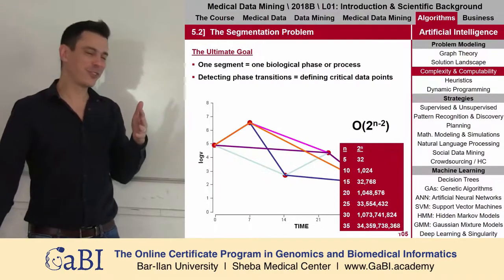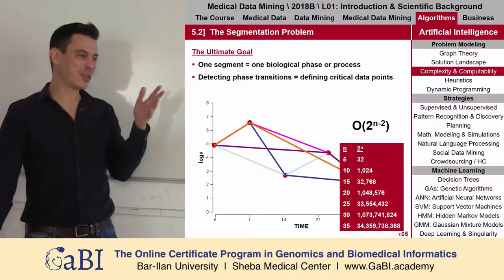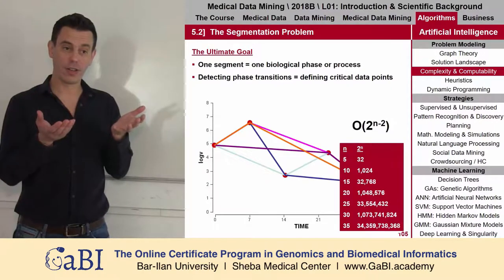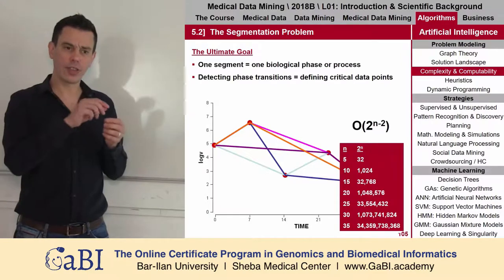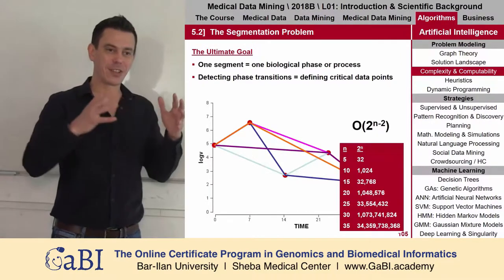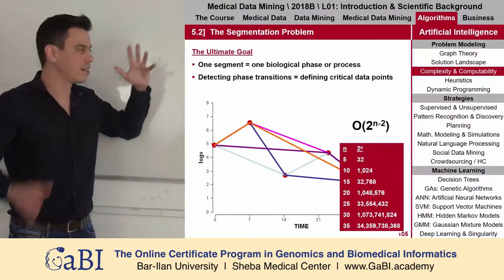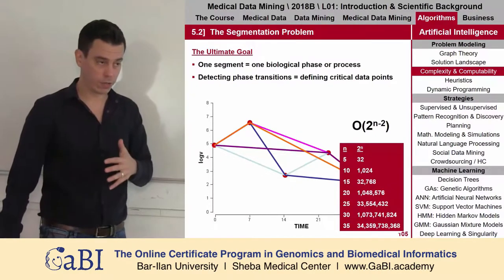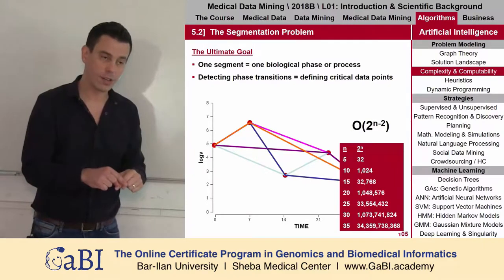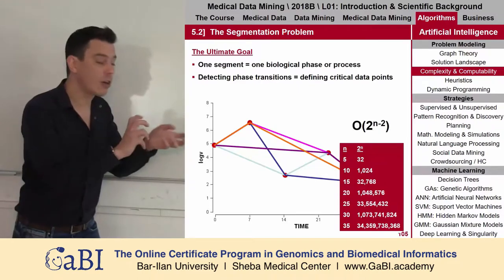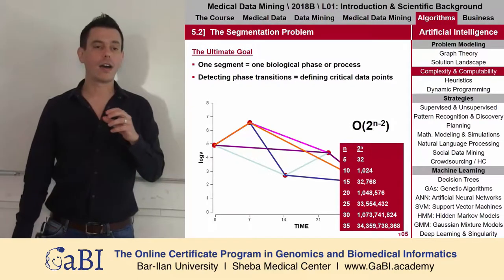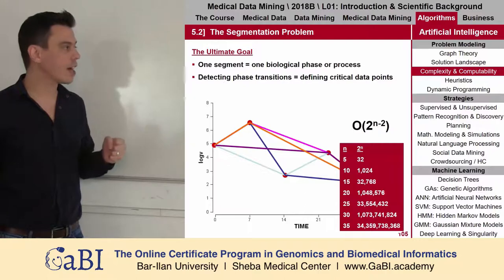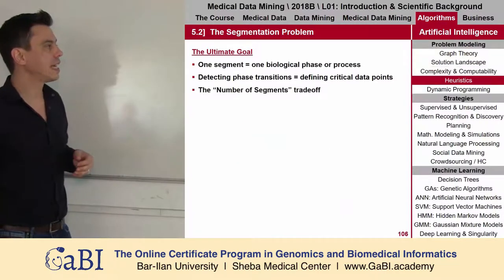This is a very, very hard problem because 2 to the power of n is a huge number. For example, the number of atoms in planet Earth is 2 to the power of 80 — an enormous number. This very little problem is actually uncomputable. No computer in the world, and even all computers working together, can calculate all the different options for just a few dozen data points.